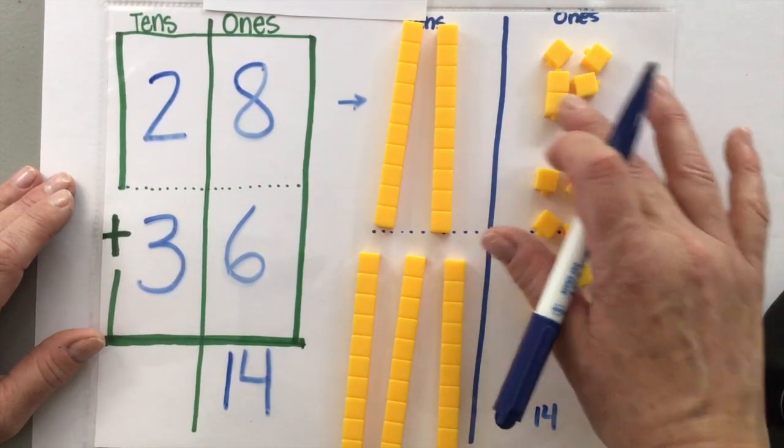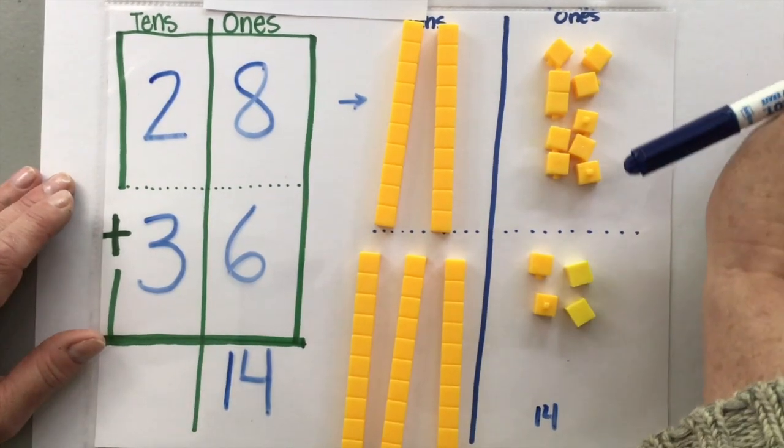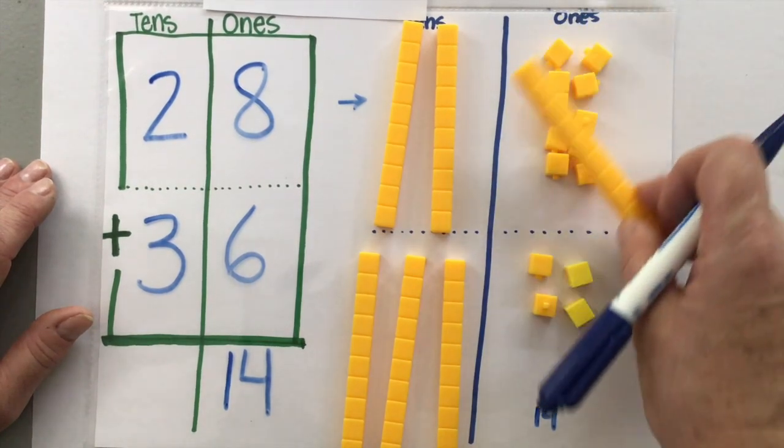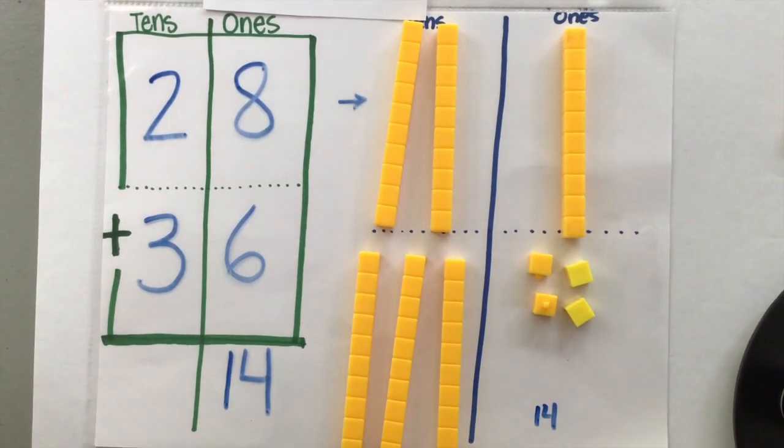Let's group 10 together. 1, 2, 3, 4, 5, 6, 7, 8, 9, 10. Here's my set of 10. And I am going to exchange those for this one set of 10.